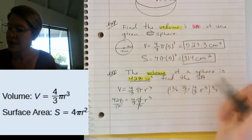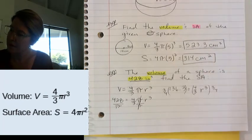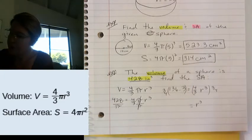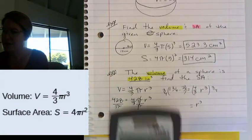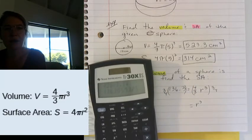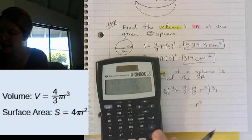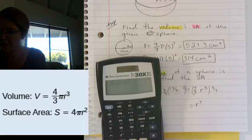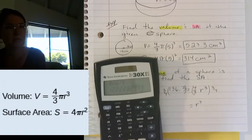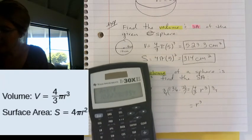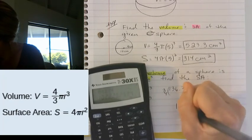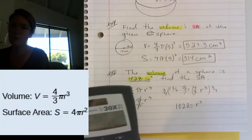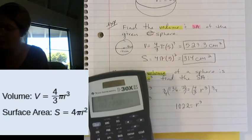So I'm going to multiply this side by 3/4. I'm going to multiply this side by 3/4. So we are going to get that the radius cubed is equal to, so I'm going to take my calculator to multiply it by 3/4. I'm going to times by 3 and then divide by 4. Same thing as timesing by 3/4. Alright, and I get that the radius cubed is equal to 102.2.